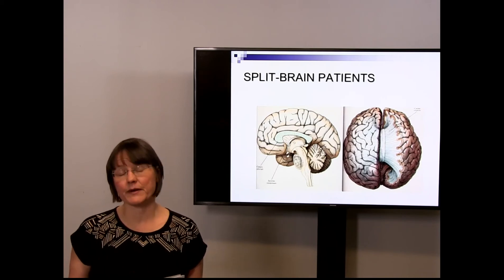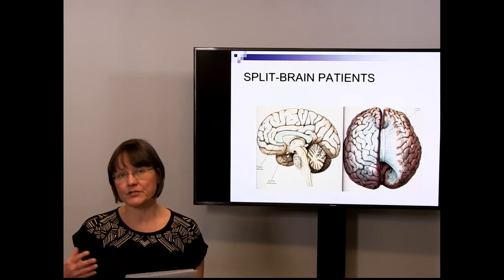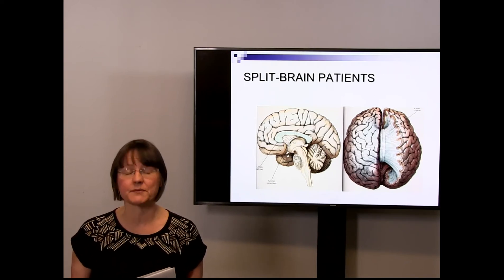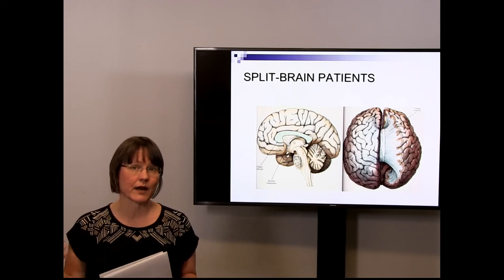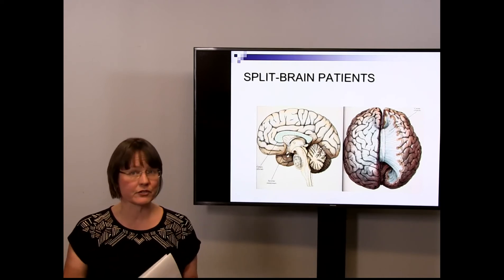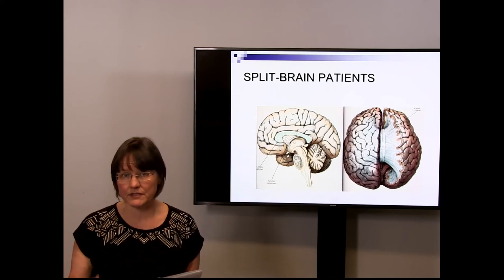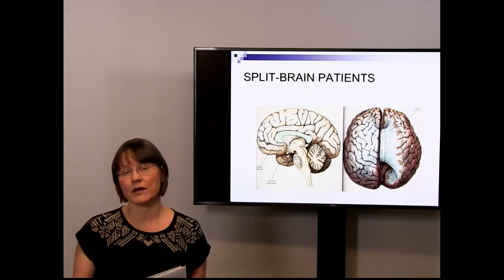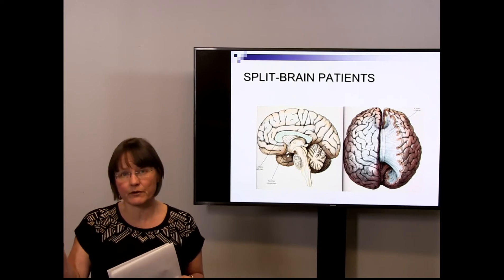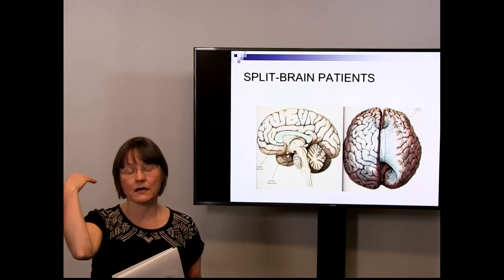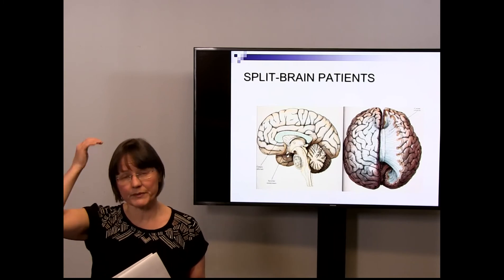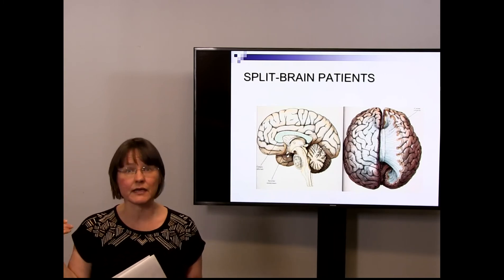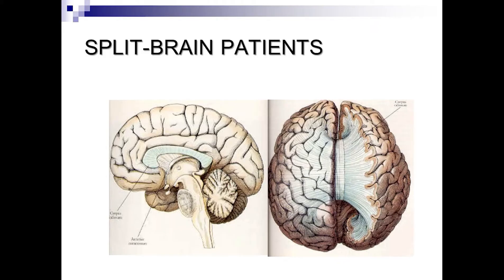The other real case is split brain patients — patients with severe epilepsy. In epilepsy, what's known as an electrical storm occurs: neurons fire chemical electrical signals that get out of control all across the brain, resulting in an epileptic fit. Neurosurgeons tried to prevent the fit from going from one hemisphere to the next by cutting the corpus callosum — the cords between the two hemispheres. In the image you can see those cords between the two hemispheres that they cut.